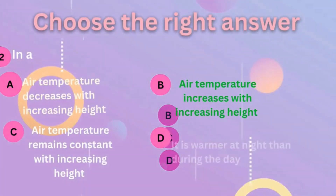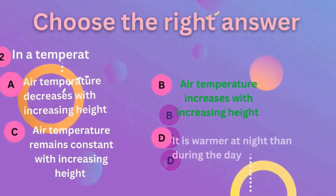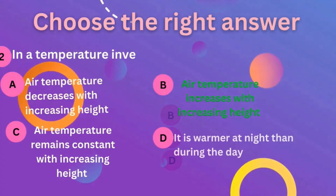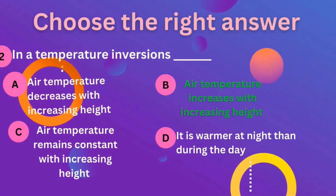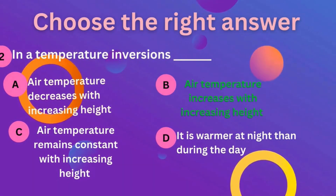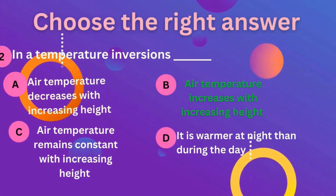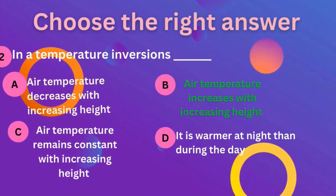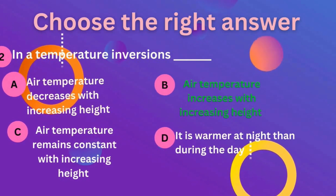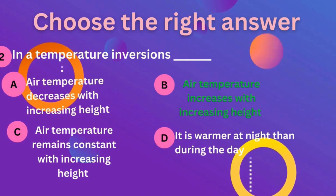Next question: in a temperature inversion, temperatures are? The correct answer is B — air temperature increases with increasing height.